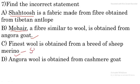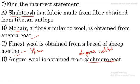The finest wool is obtained from a breed of sheep called Merino, and they originally belong to Spain — this is true, so the finest wool is obtained from Merino sheep. Angora wool is obtained from the Kashmir goat — this is NOT true, because Angora wool is obtained from the Angora rabbit, not the Kashmir goat. So option D is the incorrect statement, and option D is the right answer for this question.